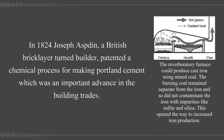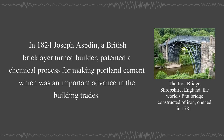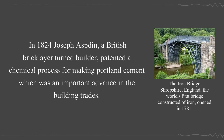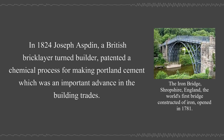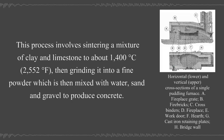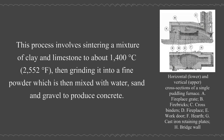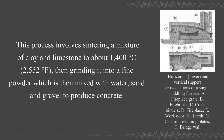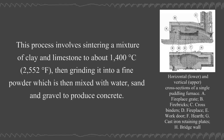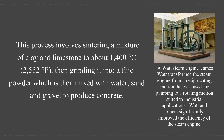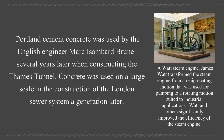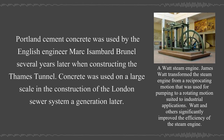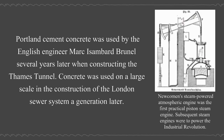In 1824, Joseph Aspdin, a British bricklayer-turned-builder, patented a chemical process for making Portland cement, an important advance in the building trades. This process involves sintering a mixture of clay and limestone to about 1,400°C, then grinding it into a fine powder, which is then mixed with water, sand, and gravel to produce concrete. Portland cement concrete was used by the English engineer Mark Isambard Brunel when constructing the Thames Tunnel, and concrete was used on a large scale in the construction of the London sewer system a generation later.